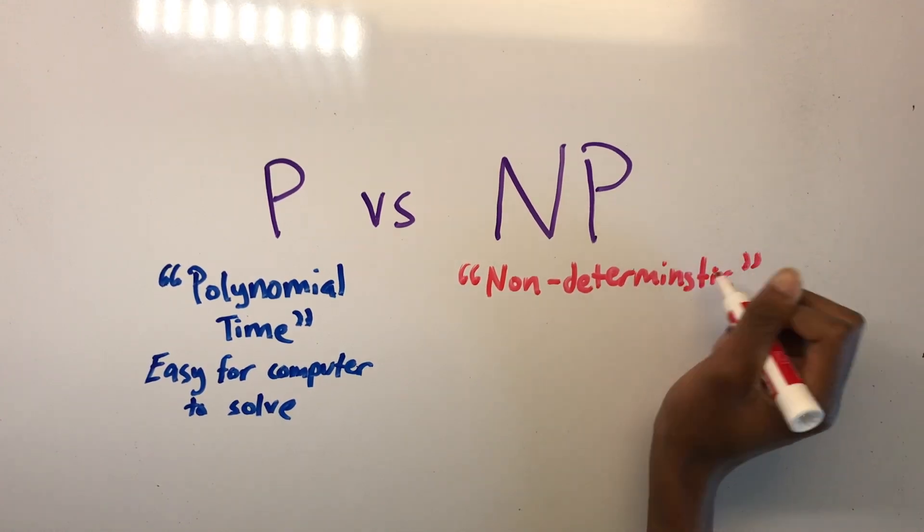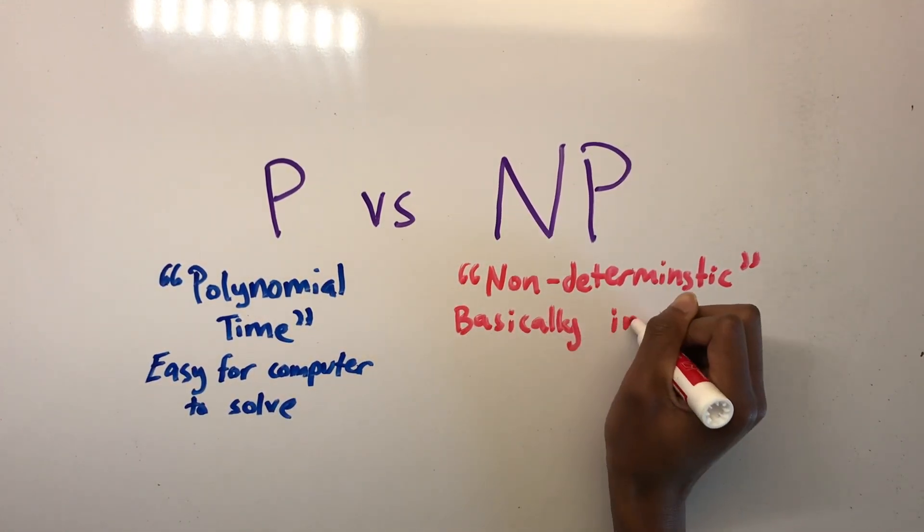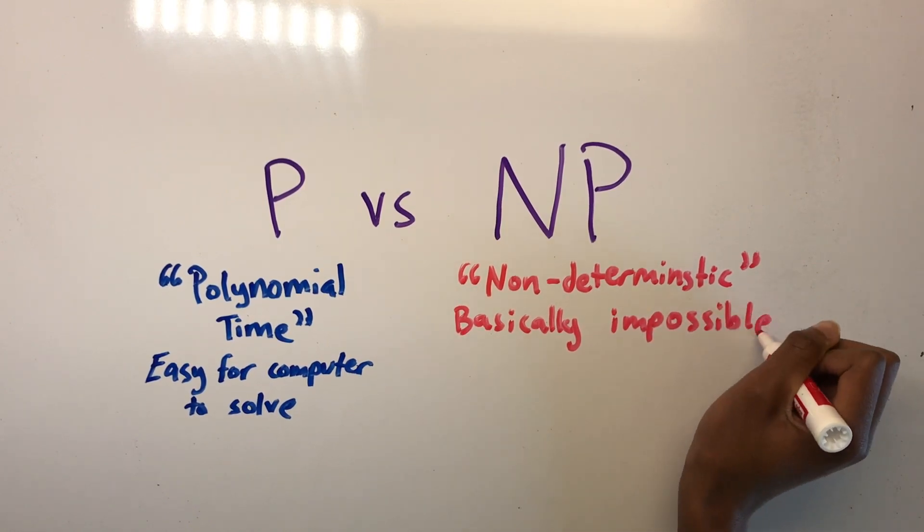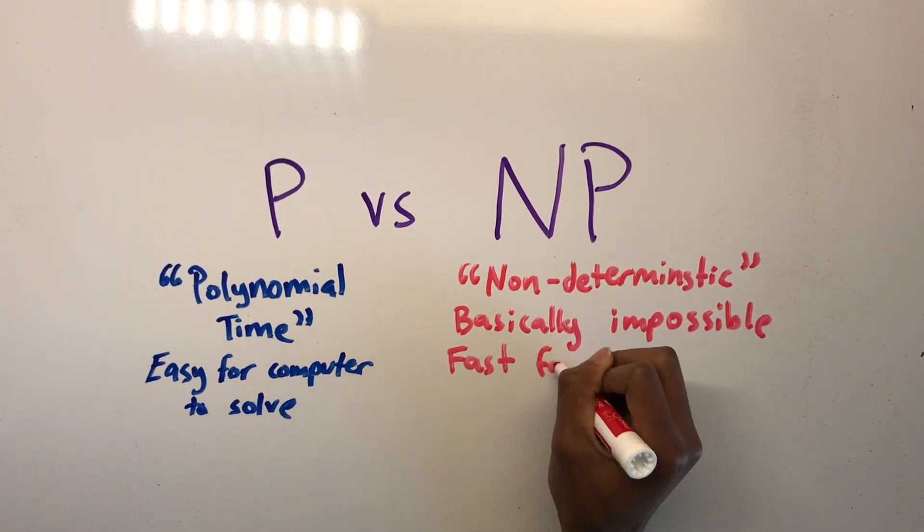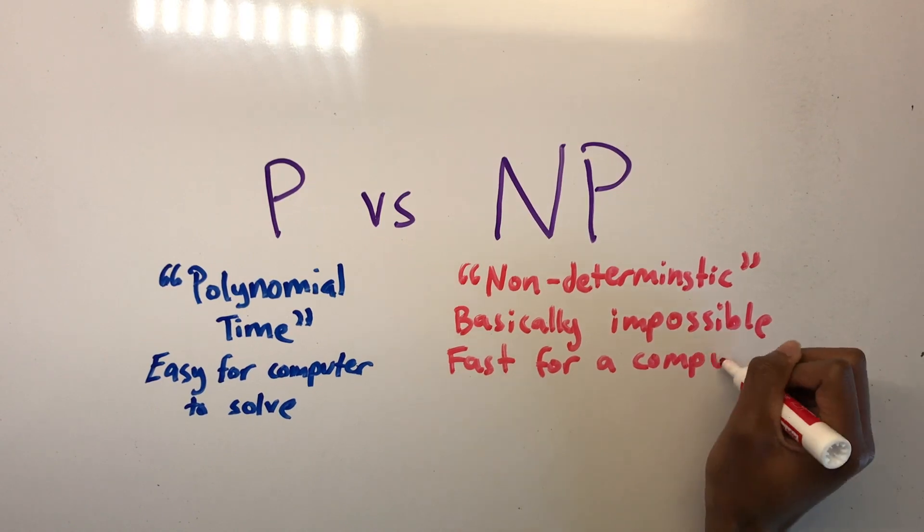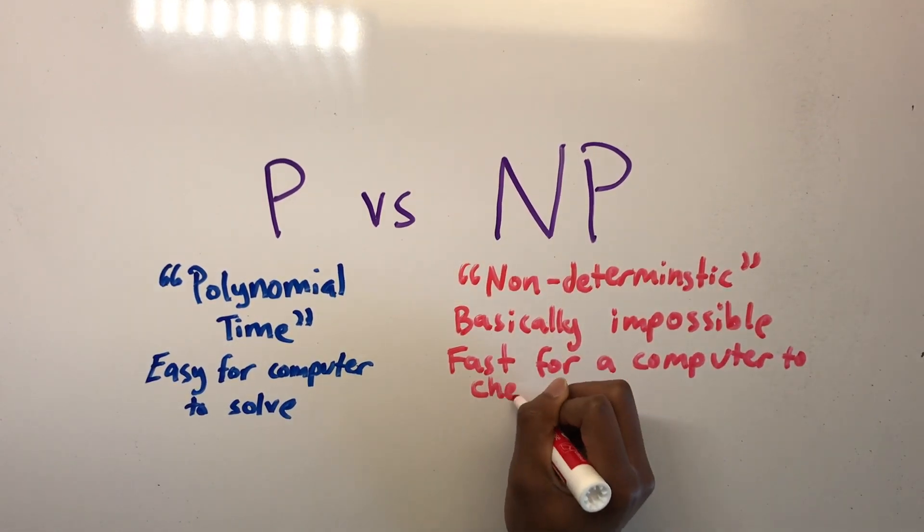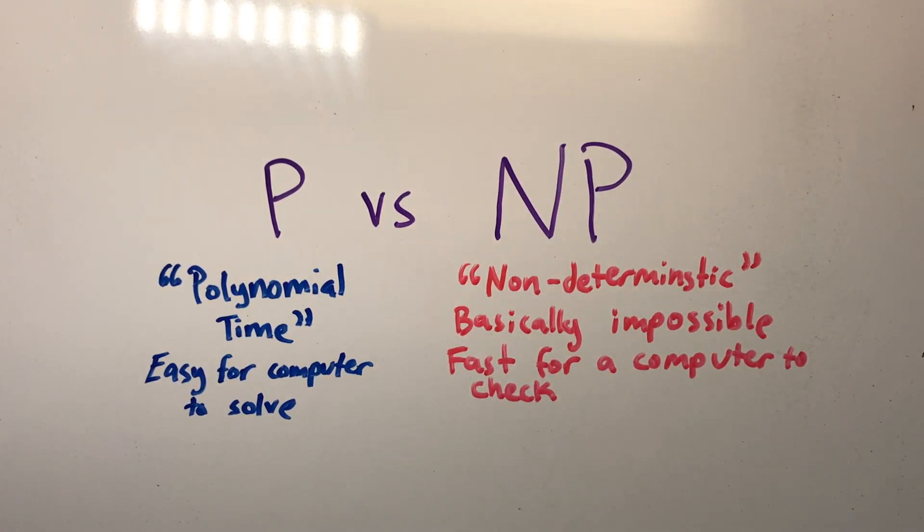P and NP are the two types of math problems referred to. P problems are fast for computers to solve, and so are considered easy. The P stands for polynomial time. NP problems are fast and so easy for a computer to check, but are not necessarily easy to solve. The NP refers to non-deterministic polynomial time.